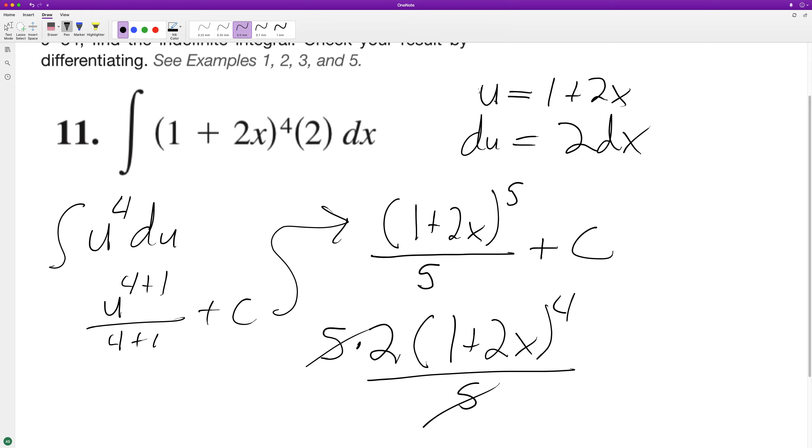We have over 5 here; these cancel out, and we're just left with 2 times the quantity (1 + 2x) raised to the fourth. That matches what we originally had, so we found the correct integration.